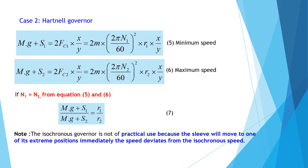Next, we consider the spring controlled governor, or Hartner governor. Neglecting obliquity, we take x1 = x2 = x, y1 = y2 = y, and a1 = a2 = 0. At minimum speed, equation 5 gives: Mg + S1 = 2m × (2πN1/60)² × r1 × (x/y). At maximum speed, equation 6 gives: Mg + S2 = 2m × (2πN2/60)² × r2 × (x/y).